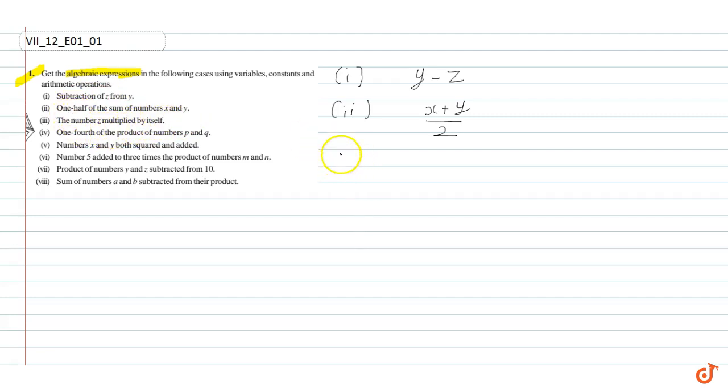Now the third question is the number z multiplied by itself. z is multiplied by itself, so z into z which is equal to z squared.